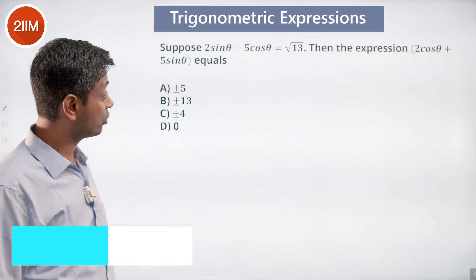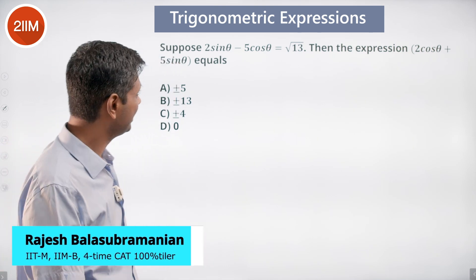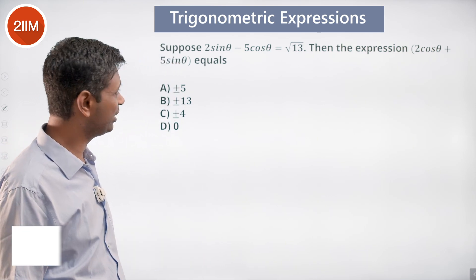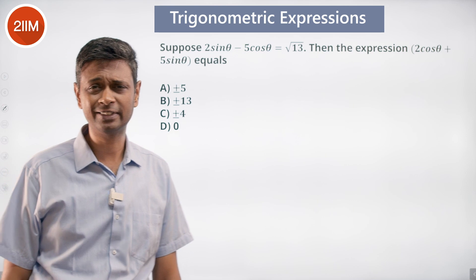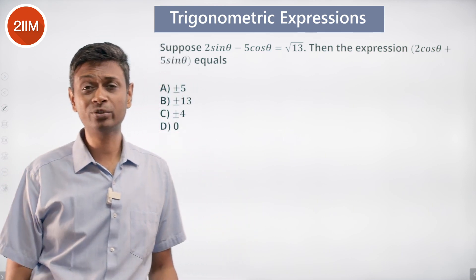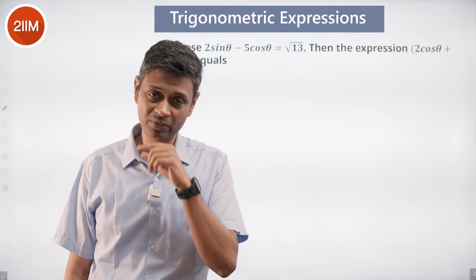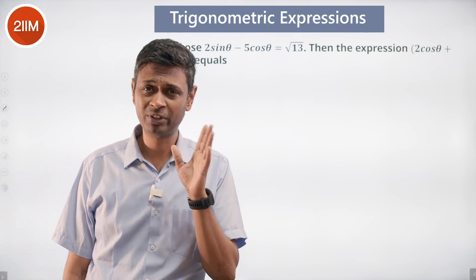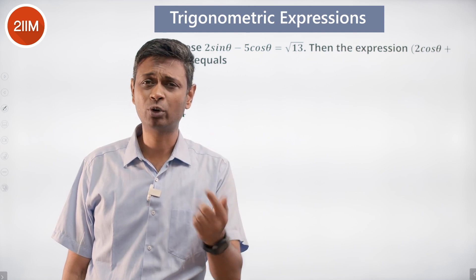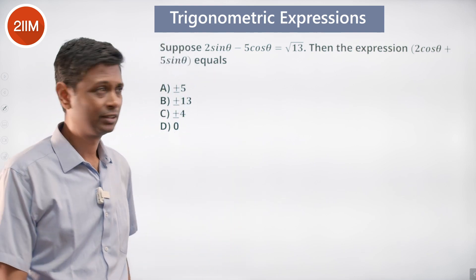Suppose 2sinθ - 5cosθ = √13, then the expression 2cosθ + 5sinθ equals. In all of these questions, I know sin²θ + cos²θ = 1 — super useful. So I am going to plant that in by squaring this expression.